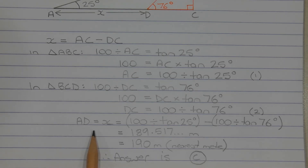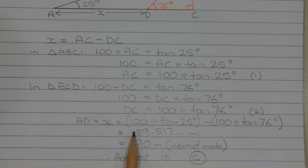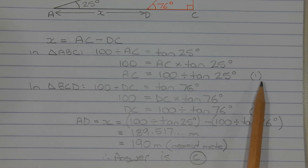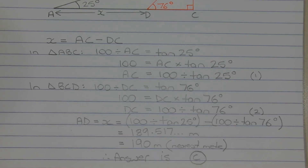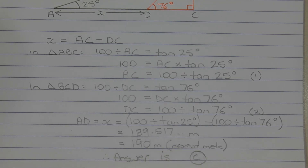AD, which equals X, is equal to the difference between AC and DC. So, that's 100 divided by tan 25 degrees from equation one, minus 100 divided by tan 76 degrees from equation two. Evaluating this expression gives 189.517 and so on meters, which rounds to 190 meters correct to the nearest meter. Therefore, the answer is option C.